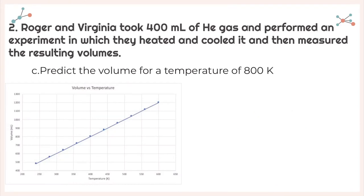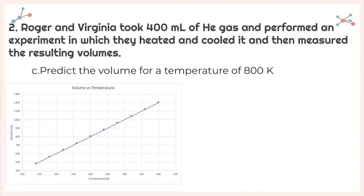For our next one, it says predict the volume for a temperature of 800 degrees Kelvin. On my graph, that's really far off, but that doesn't mean I can't use my graph to help me see where it would land. We form a straight line — it's a linear relationship between temperature and volume. So as my temperature increases, I'm going to have to have a higher volume. In this case, over 800 degrees Kelvin, I'm going to get a volume of about 1,600 milliliters.